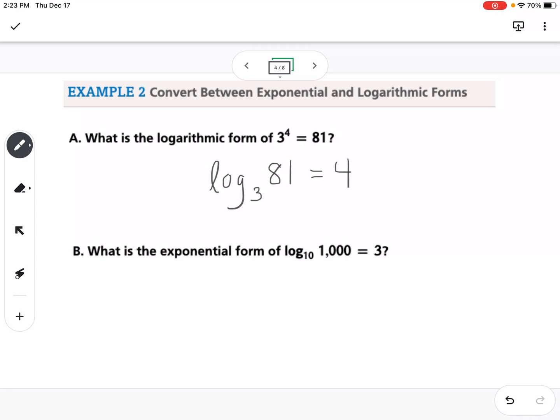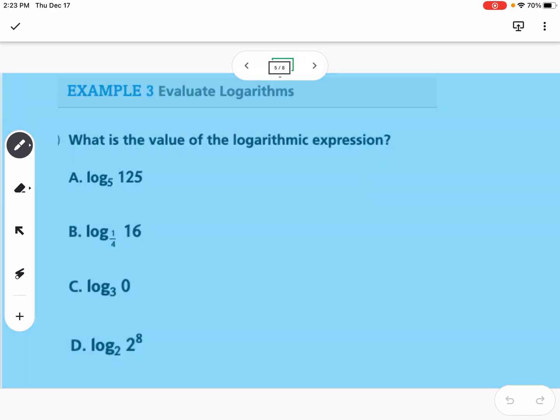Part b, this would be 10 to the third power equals 1,000. Identifying where all of those numbers go when you switch the form is important.